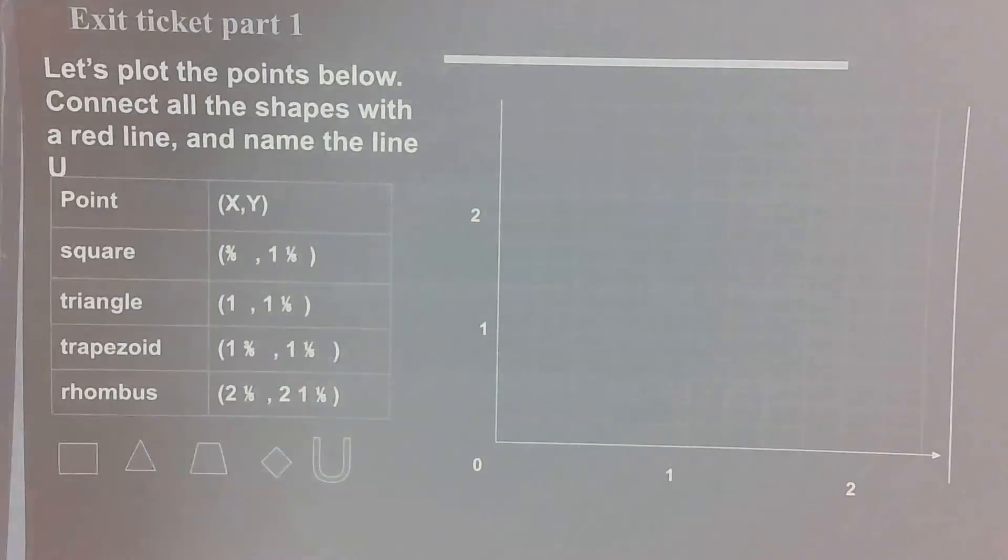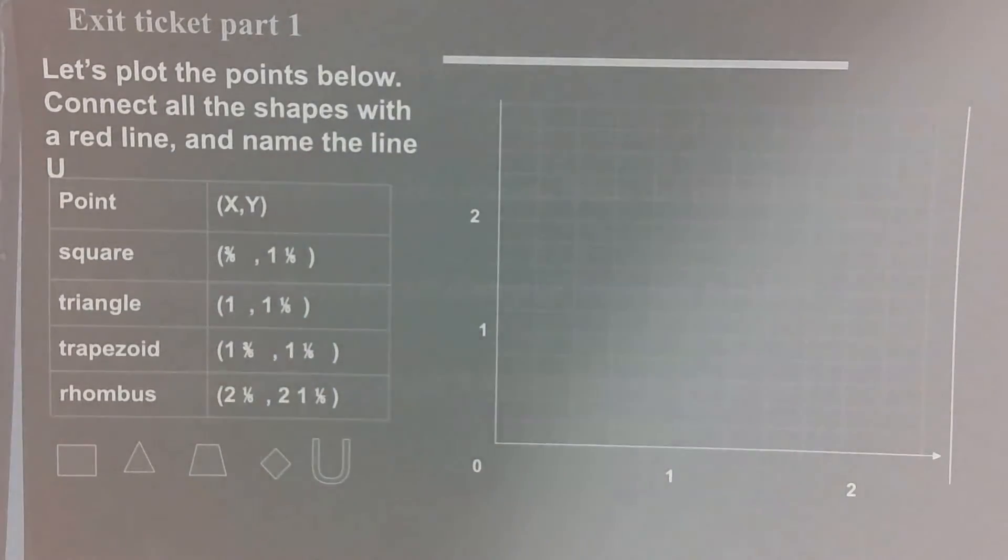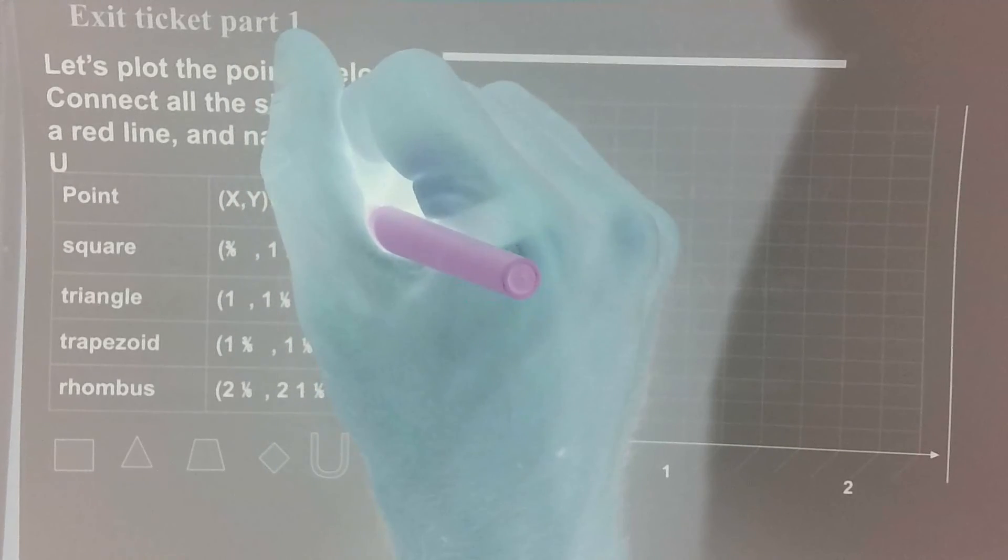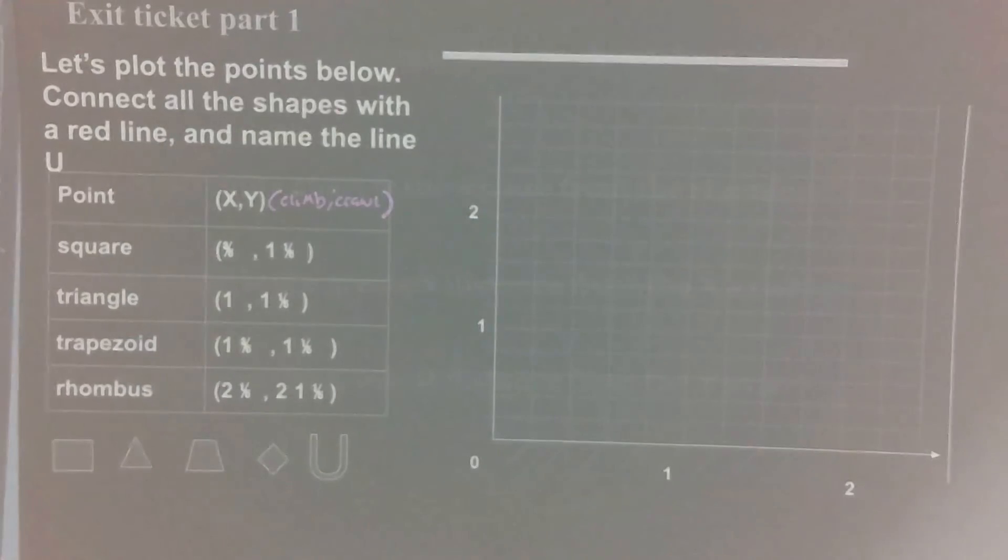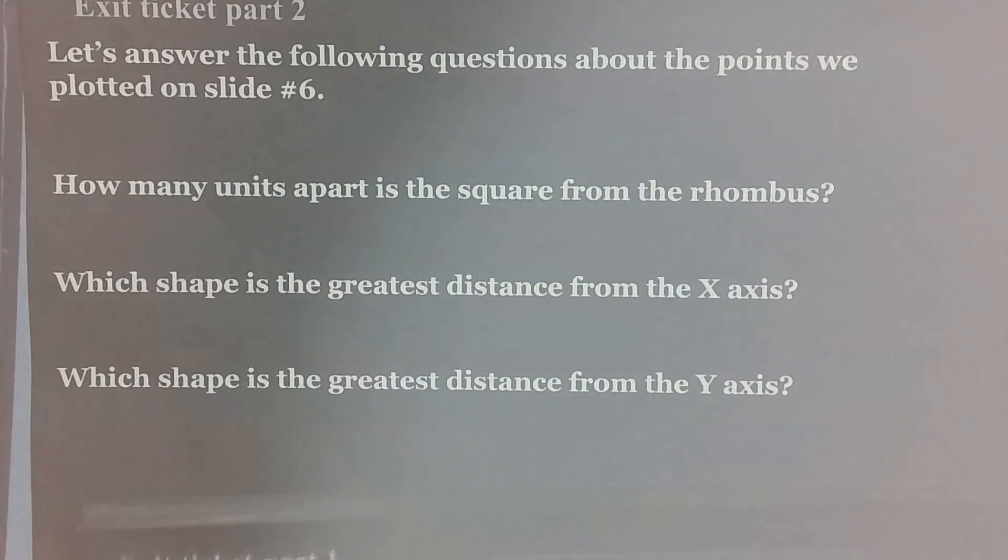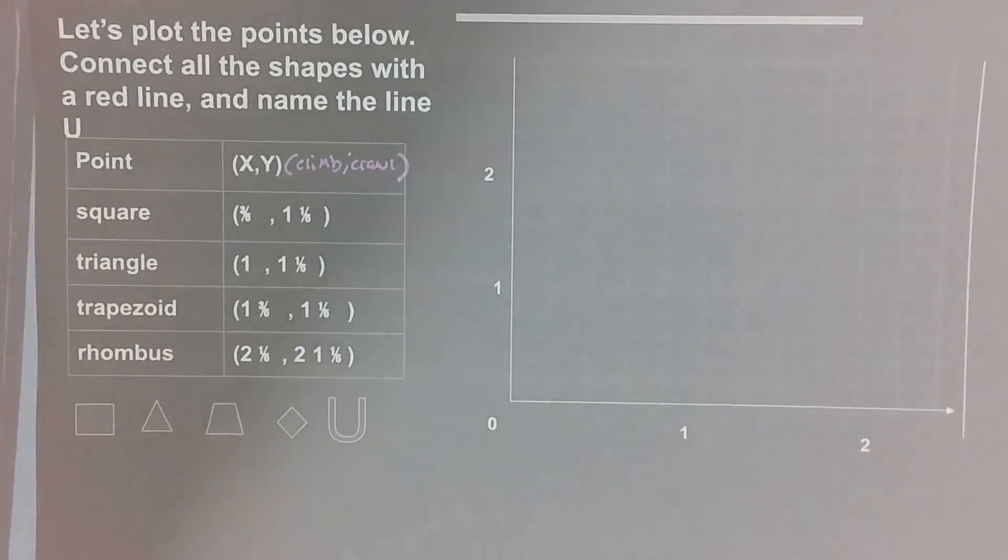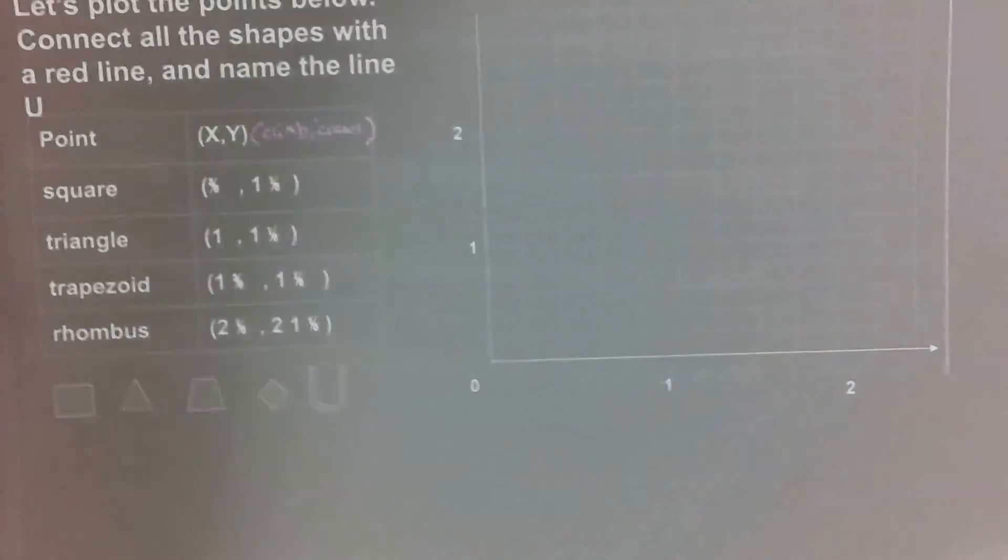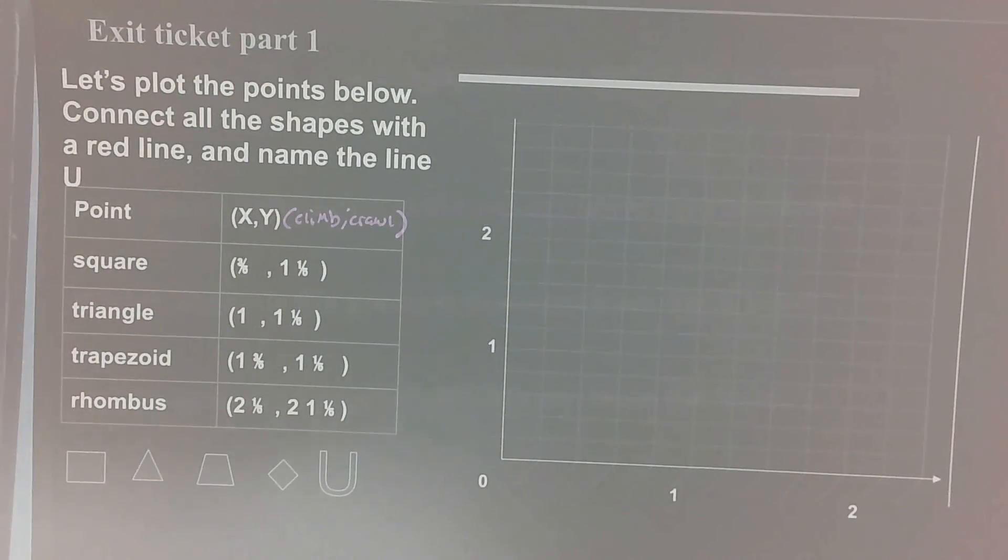Our exit ticket has two parts, very similar to the last We do we completed. You're going to plot four different shapes on your grid. Their coordinate points will have fractions in them. When you climb for x and crawl for y. You'll then create a line connecting each of these points. And then on part two of your exit ticket, you'll answer the same questions that we did for We do number three, except the coordinate points are going to be different. So your answers will not be the same. Once you've plotted your shapes, made your line, and answered these three questions, go ahead and turn in your notes.